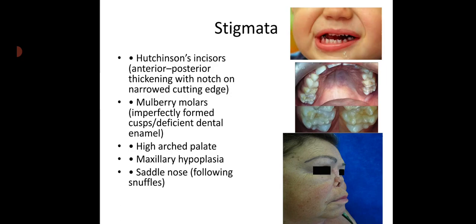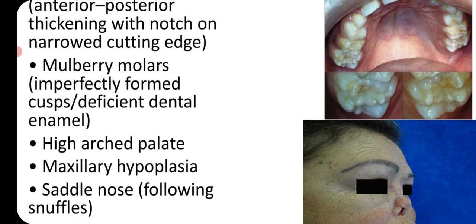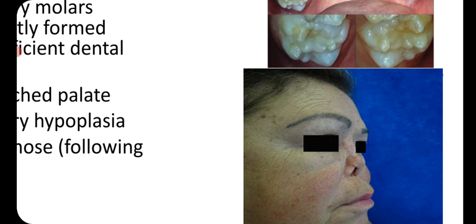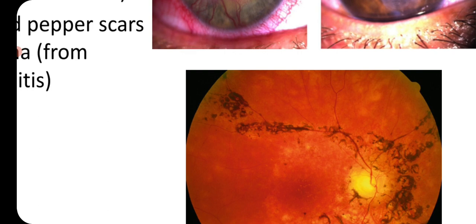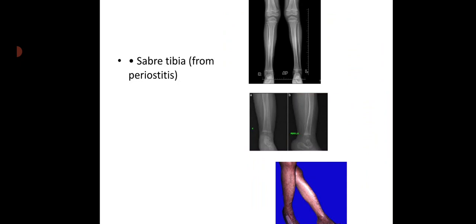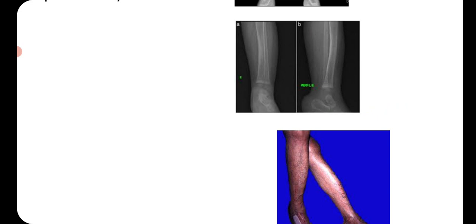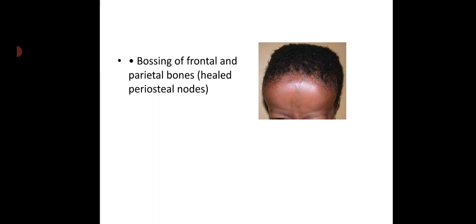Stigmata of late congenital syphilis include Hutchinson's incisors, mulberry molars, high-arched palate, maxillary hypoplasia, saddle nose following snuffles, rhagades (radiating scars around mouth, nose, and anus following the rash), corneal scars from interstitial keratitis, salt-and-pepper scars in the retina from choroiditis, saber tibia from periostitis, and bossing of the frontal and parietal bones.